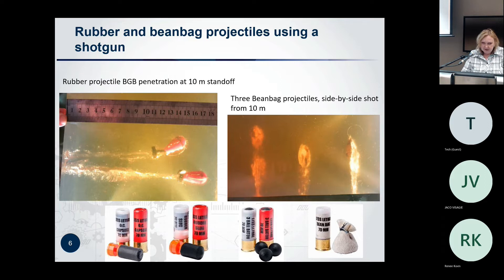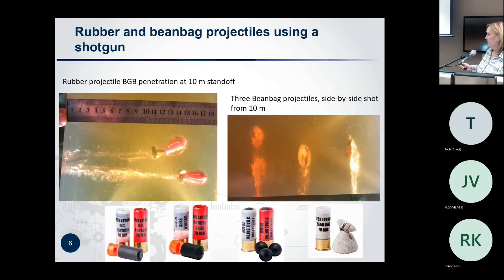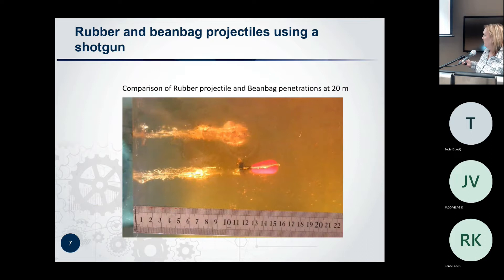We were asked to evaluate these projectiles and beanbags. We found somebody who could build us some gelatin blocks. When we actually shot the shotgun, the penetration was much further than we anticipated for both the rubber projectiles as well as the beanbags. This is how a beanbag actually looks. You can see the penetration of the rubber projectile is much deeper than the beanbag. But even the beanbag penetrated much too deep into a surrogate of a human body.